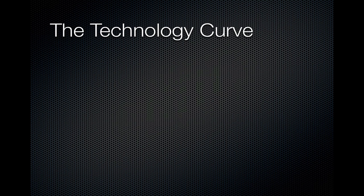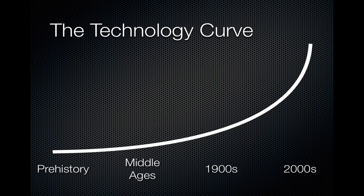The next concept is the technology curve. This is an exponential curve where if you take prehistory on the left — the dawn of human civilization — and current time on the right, we've got vocals, percussion, cave people beating on logs — not the most sophisticated musical technology. By the time you get closer to the Middle Ages, some early Greek stuff, you've got various string and brass instruments. Right around the turn of the 19th to 20th century, you've got the invention of analog: wax cylinders, wire recorders, eventually magnetic tape, all of which provide more and more power to the sound artist.